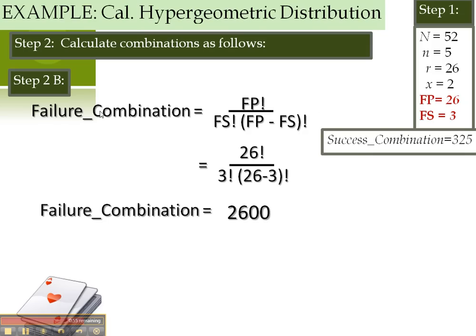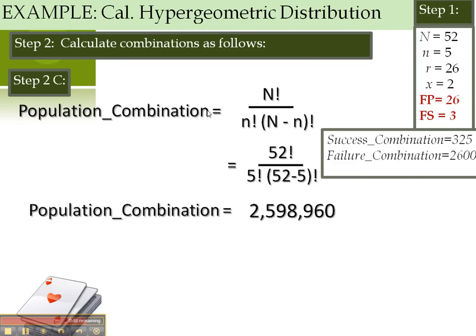Do the same thing for the failure combination. Remember, you just read your variables, and then for your population.